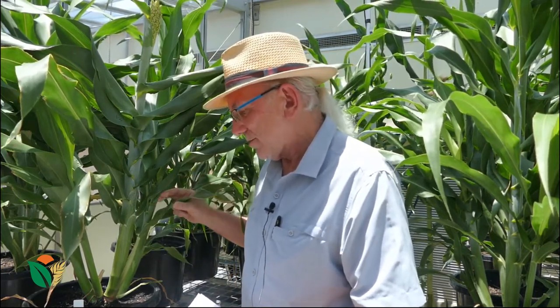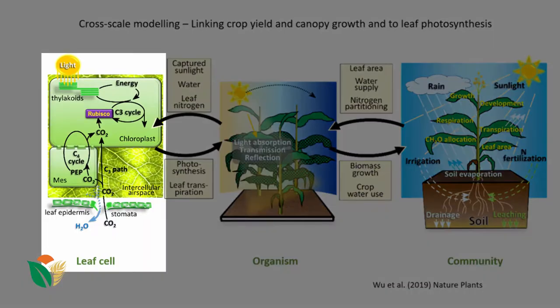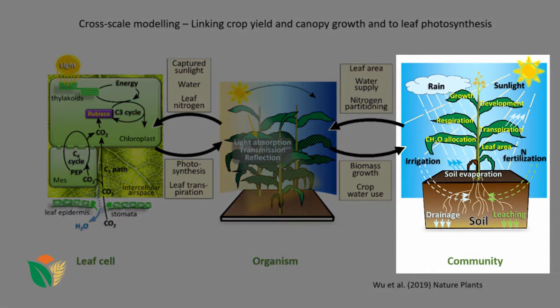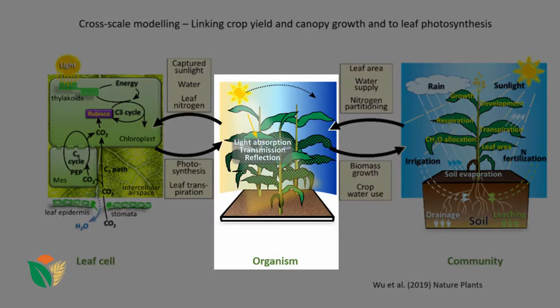We're particularly interested in what happens if we can manipulate photosynthesis. Photosynthesis is the process of fixation of carbon by the leaves and it's critical to the growth and development of the plant. What I want to start off with is thinking about how you move across scales — photosynthesis is really happening at a cellular scale, crop yield is really happening at a community scale with lots of these plants in a field, and the individual organism is the level at which this is all integrated.